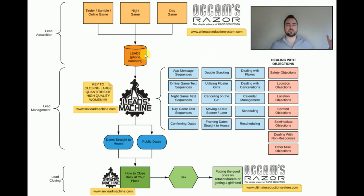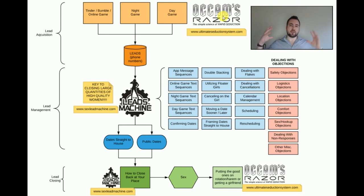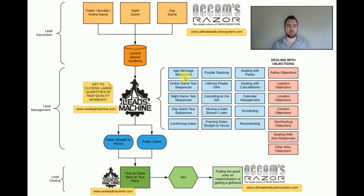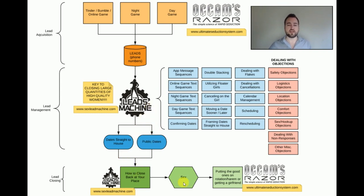A lot of guys getting phone numbers don't know what to text, and there are subtle nuances I figured out over ten years of relentless testing. Just texting whatever you want or copying some random video won't cut it. The reason I named the product Occam's Razor is because I make it as simple as possible but no simpler — that's been my philosophy throughout. You're getting the result of ten thousand leads and a thousand closes — my exact texts, sequences, and blueprint to turn a phone number into a date.